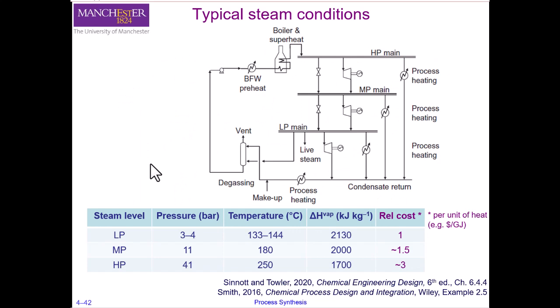A typical configuration of a steam system has low pressure, medium pressure, and high pressure steam mains, although the diagram doesn't show the very high pressure level of the typical boiler. The pressure of the steam mains varies from site to site, but the values given here are typical of a boiler system. The steam temperature is dependent on steam pressure as expected, and the cost is based on the amount of power that can be generated depending on the pressure of the steam.